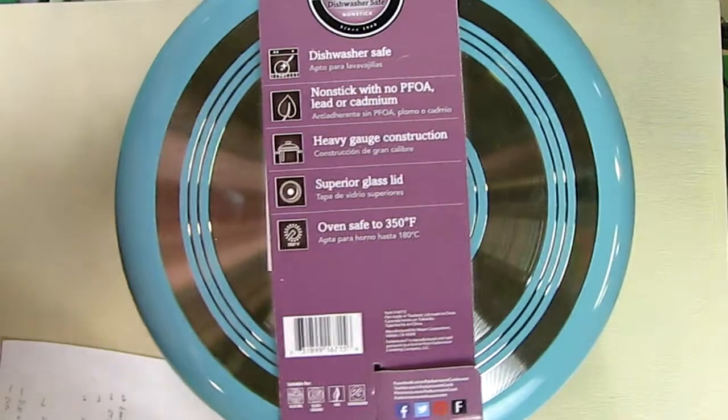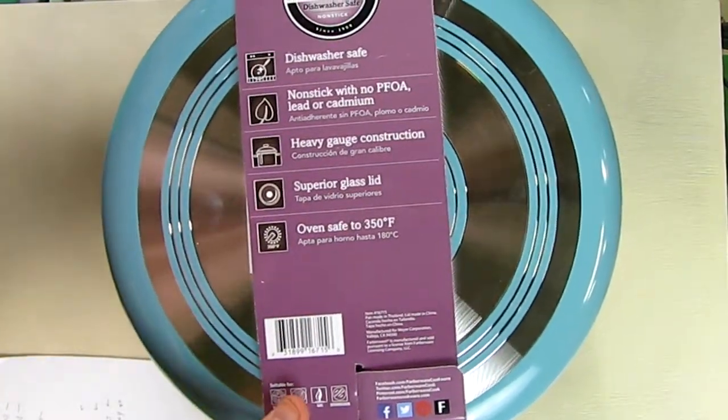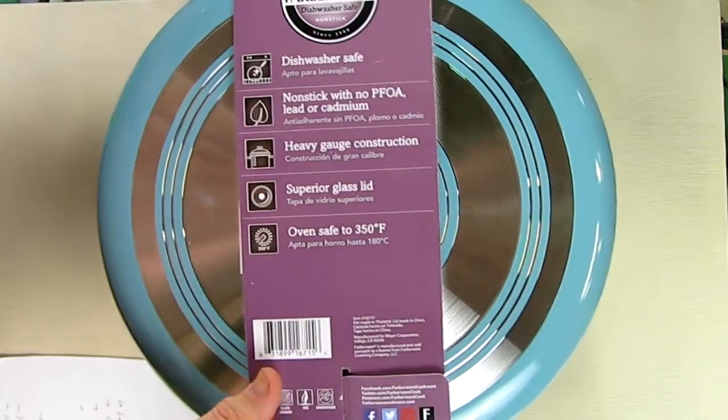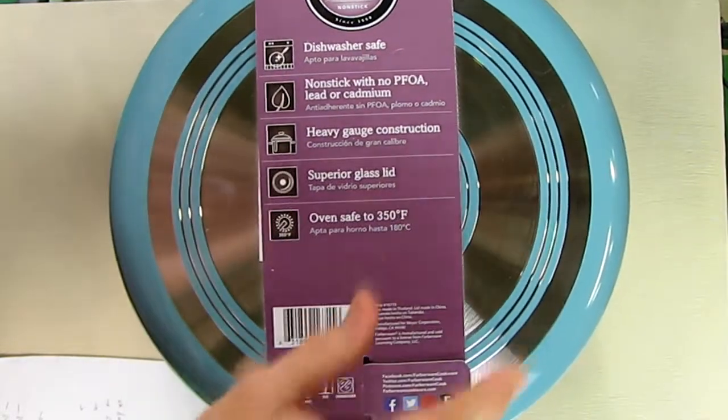Like I mentioned, 350 degrees, it's oven safe including the pan and the handles and the cover itself. It comes with a cover and I'm going to take the cardboard off and look at the inside of the pan here.